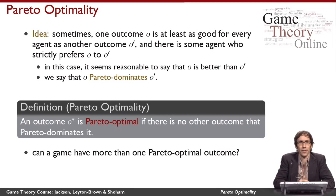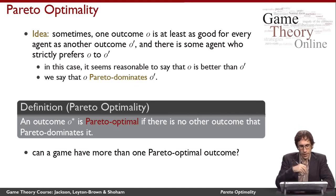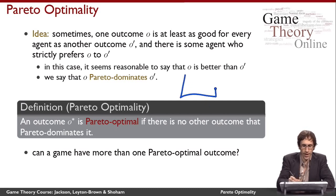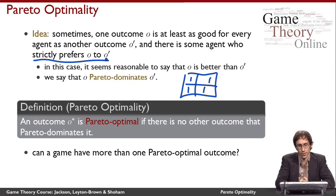Let's test our understanding by asking a couple of questions. Is it possible for a game to have more than one Pareto optimal outcome? Of course it is, because it's possible for two outcomes to neither Pareto dominate each other. For example, if all payoffs in the game are the same — if everyone gets a payoff of one no matter what happens — then nothing dominates anything else, because domination requires somebody to strictly prefer something. So this game has more than one Pareto optimal outcome.